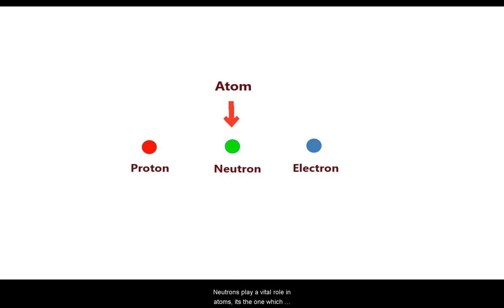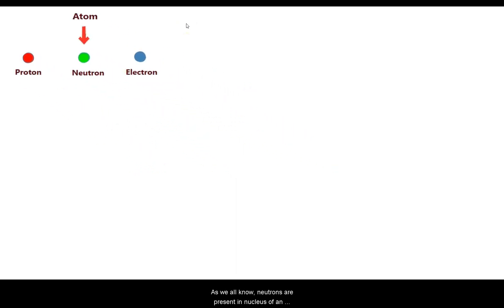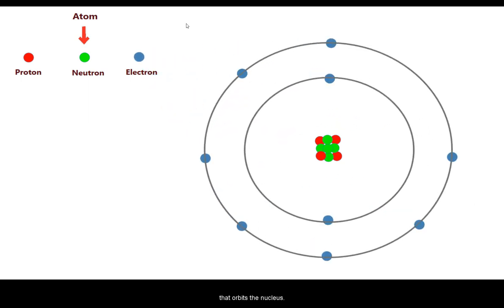Neutrons play a vital role in an atom. They give stability to an atom. As we all know, neutrons are present in the nucleus of an atom along with protons, and electrons exist in a cloud that orbits the nucleus.